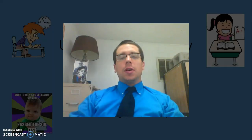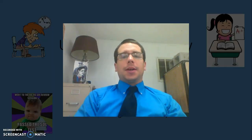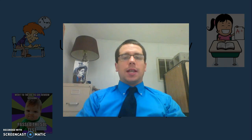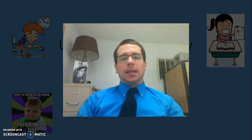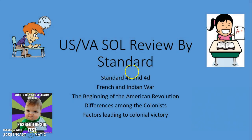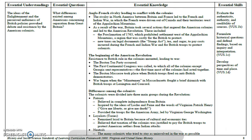Welcome back to US VA SOL review by standard. This is part two of the Revolutionary War standard, covering standards 4C and 4D: the French and Indian War, the beginning and end of the American Revolution, differences among the colonists, and factors that led to colonial victory.